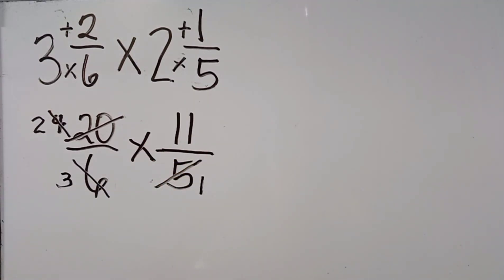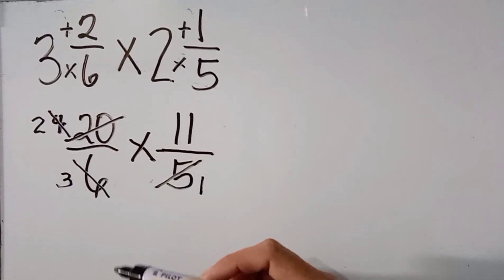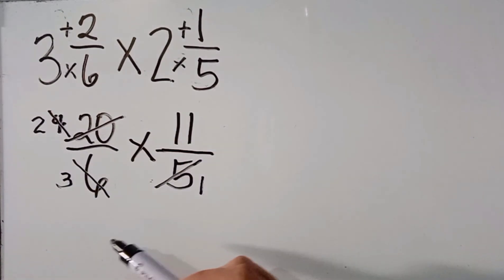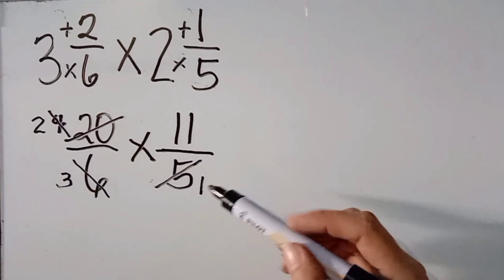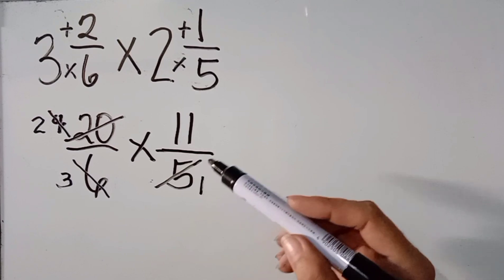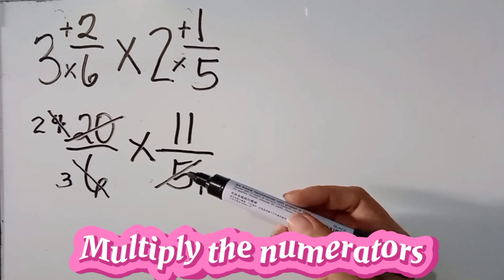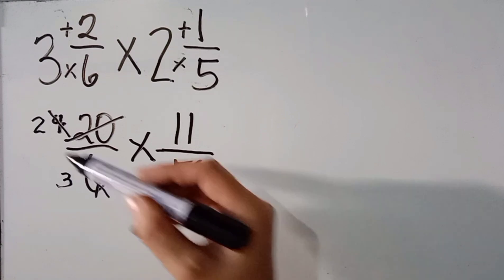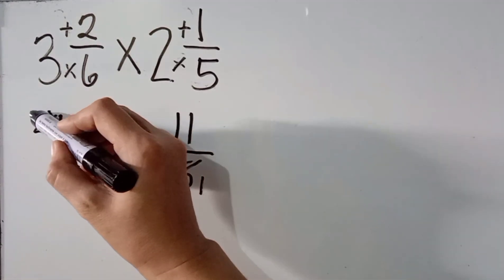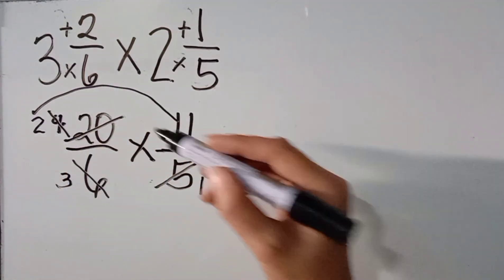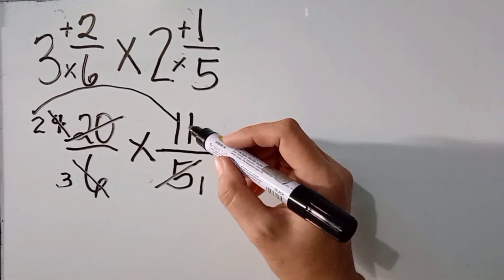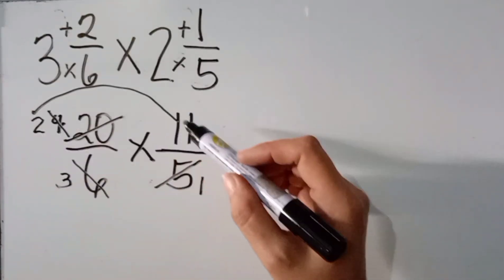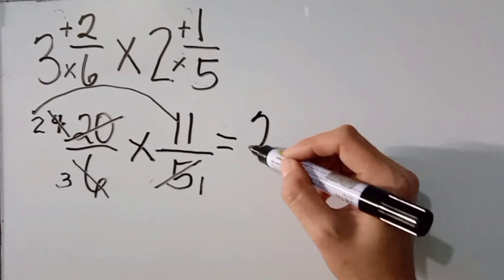Next. Meron pa kayang may common factor dyan? Wala na po. So, sunod na gagawin natin. The next step that we are going to do is we are going to multiply the numerators. Ang numerators natin ay ito pong 2 — 11 rather — at saka 11. So, 2 times 11, the answer is 22.